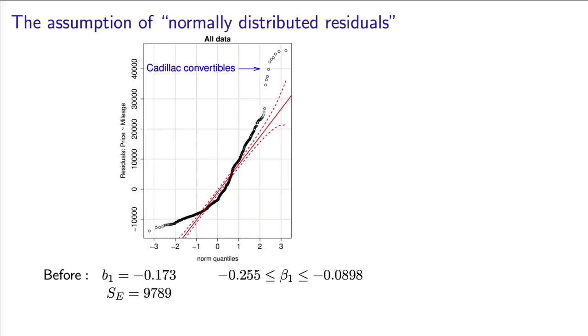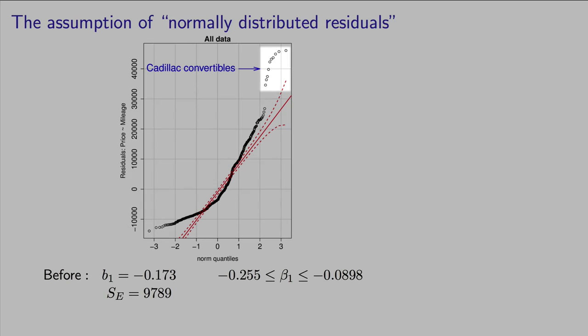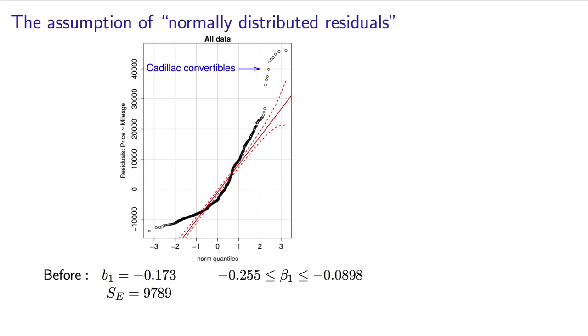Now, when we examine the residuals, we see strong evidence of non-normality here. Some of the main outliers that we see are here in this cluster of points on the QQ plot. Now, as I've said, outliers are the most interesting data in the dataset, and when we go and examine these more closely, we notice that these cars up here are all Cadillac convertibles.